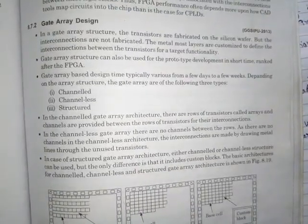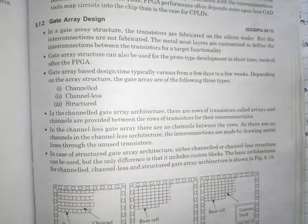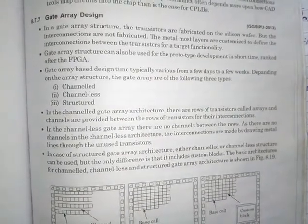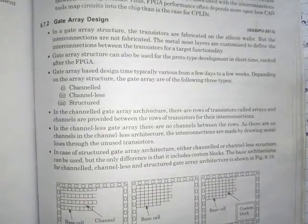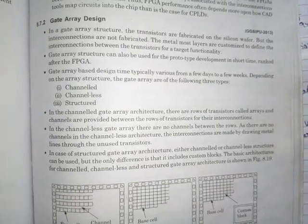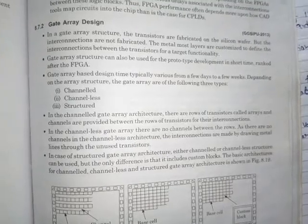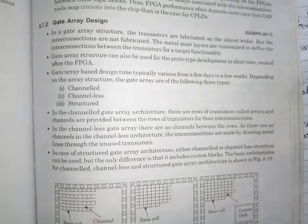The metal layer, most of the metal layers here perform the function of interconnection between transistors for the target functionality. Here as interconnections are not being fabricated, metal will act as interconnection.